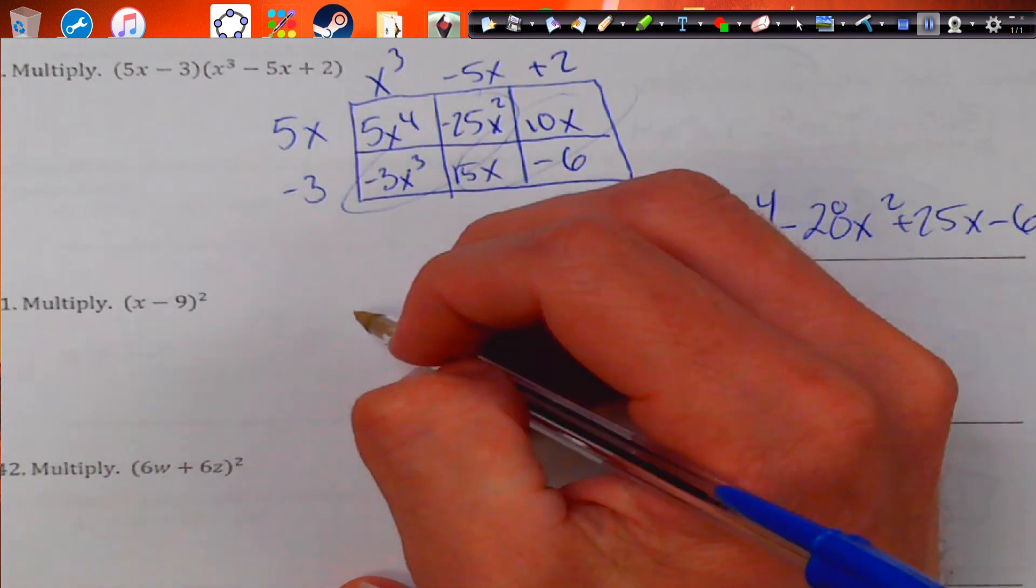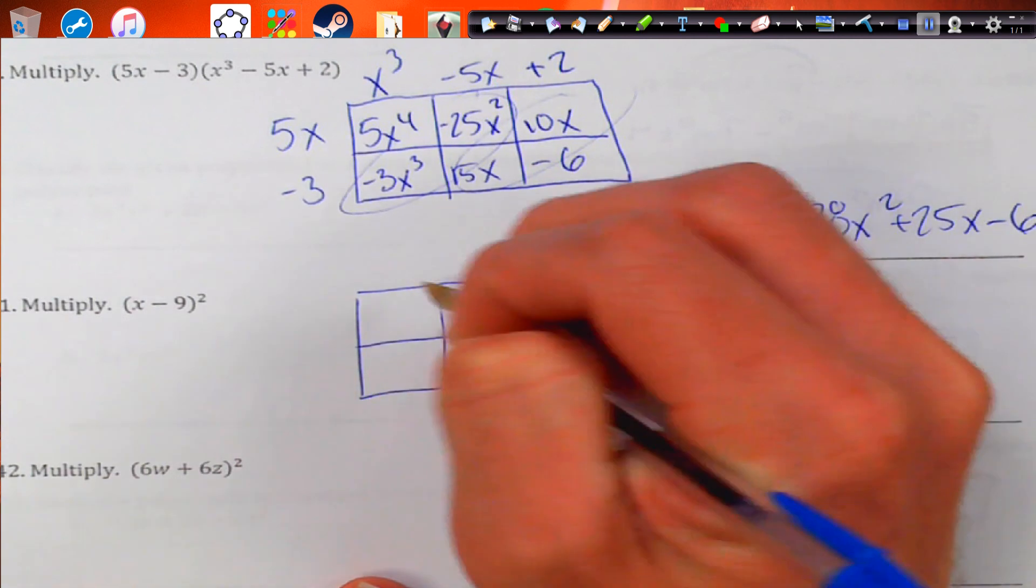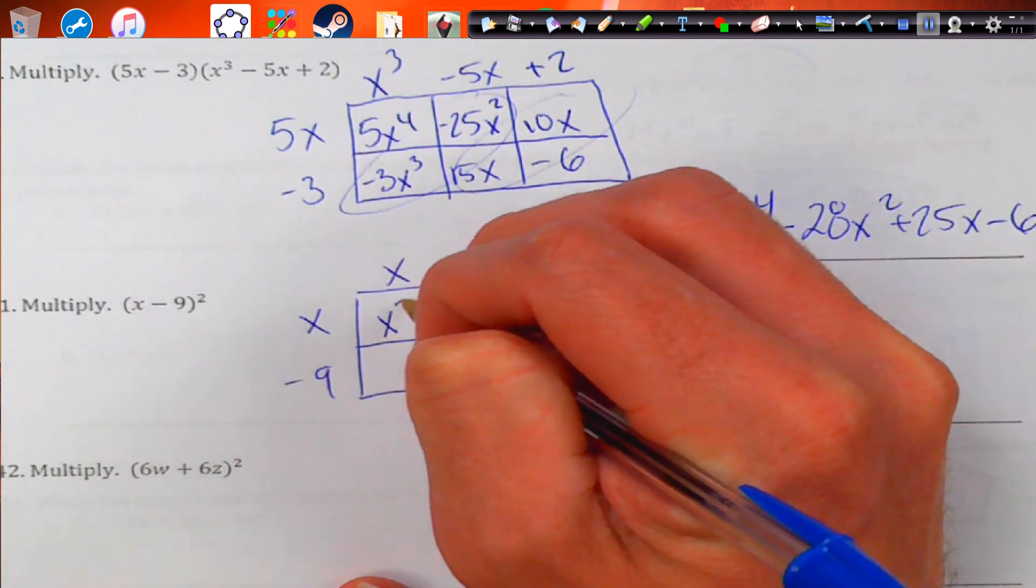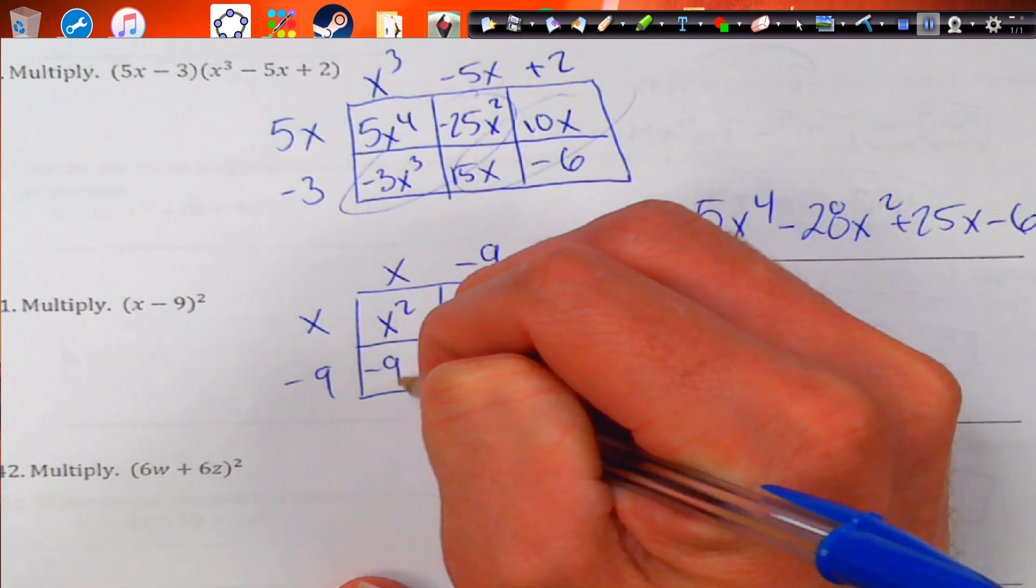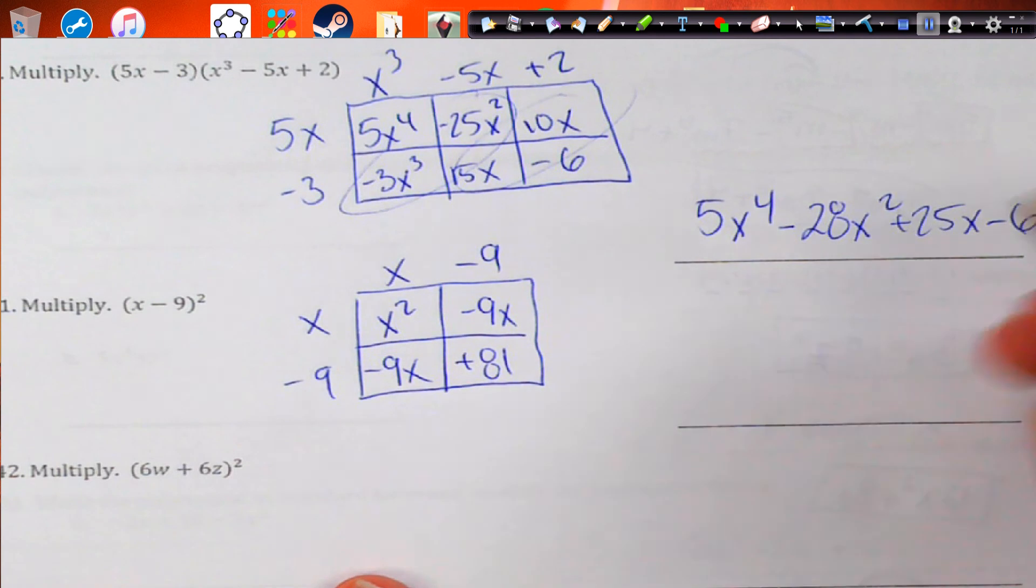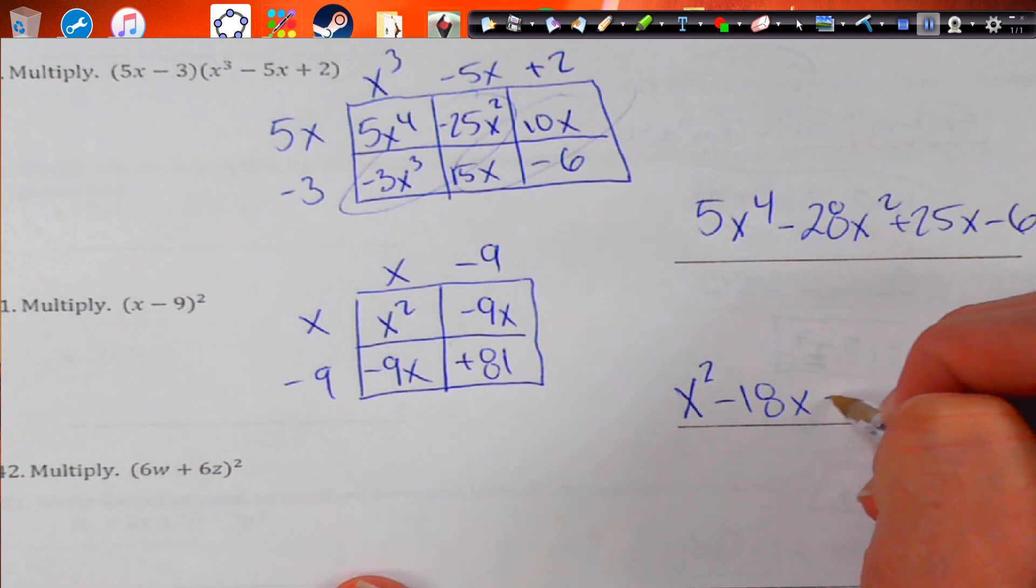x minus 9 squared. We still have to do the box method. We can't really escape this. We just write the same thing twice. We get x squared. This is going to become negative 9x. This is negative 9x. And negative 9 times negative 9 is positive 81. So, we get x squared. That's going to become negative 18x and a positive 81.